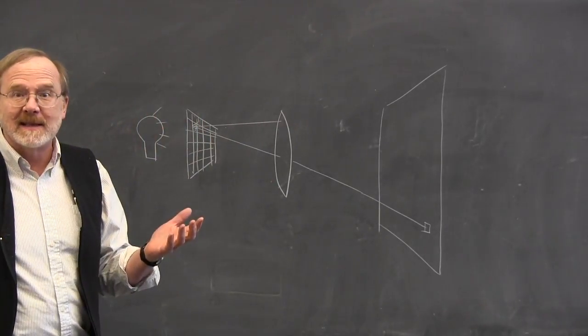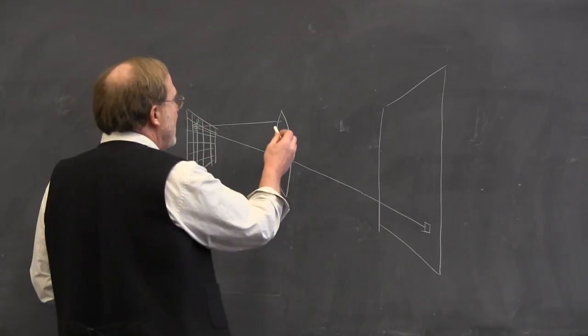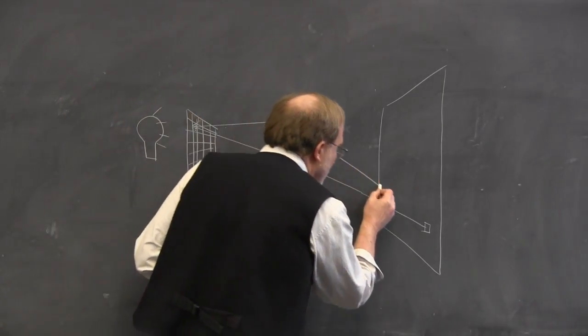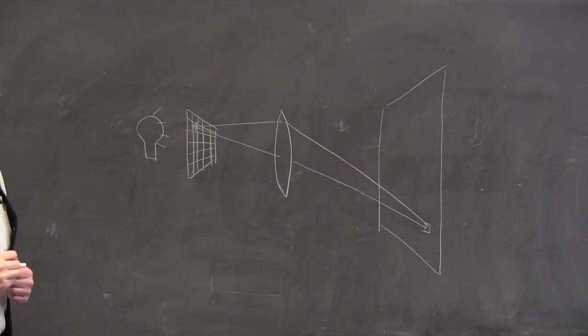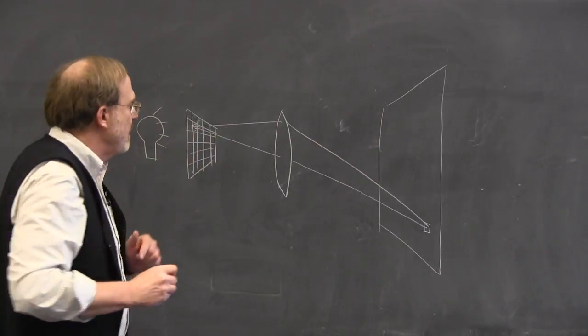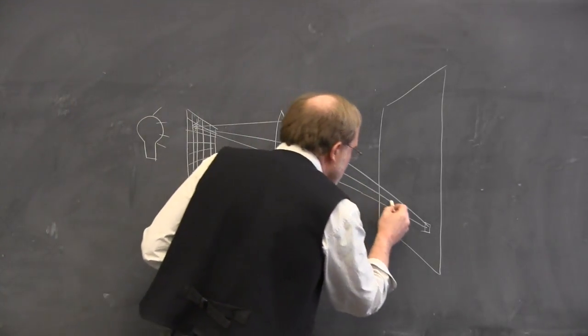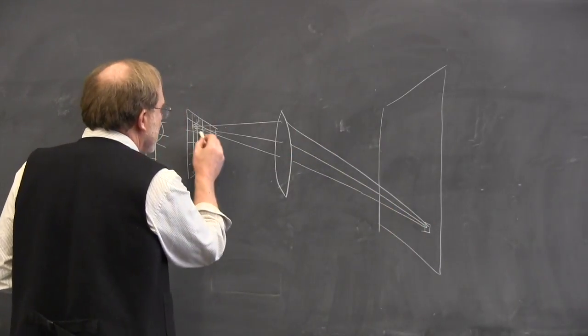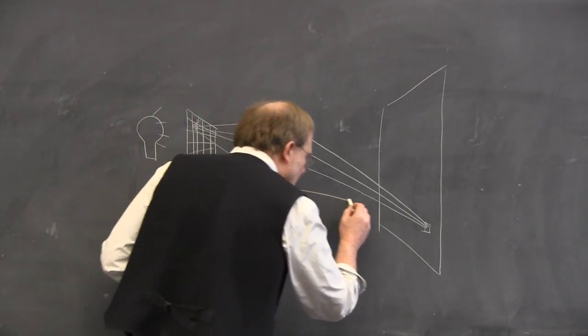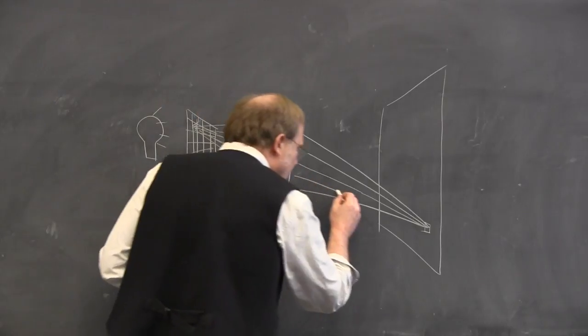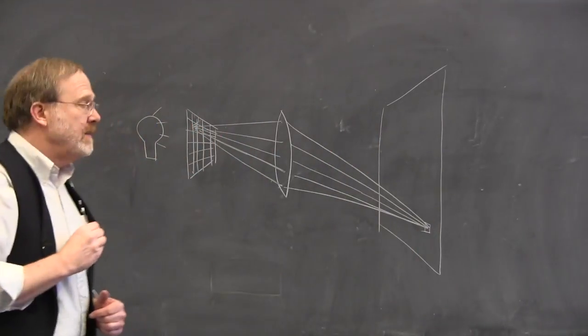The nice thing about this lens is that it will bend this ray so that it converges right to the same place on the screen as the ray that went through the center. So here's another ray, and it goes right through the lens onto that same pixel. Here's another one—it bends this way and ends up right on that pixel. Here's another one that goes this way and ends up right on that pixel.